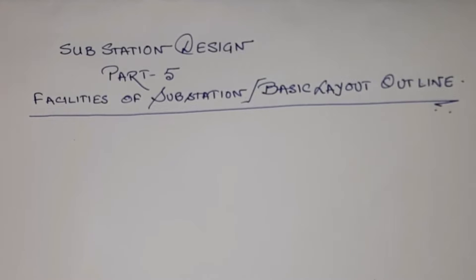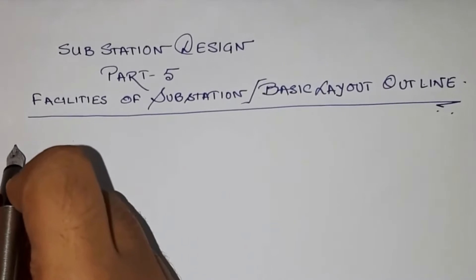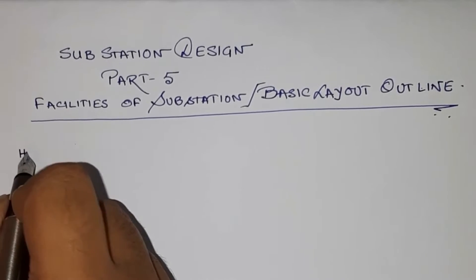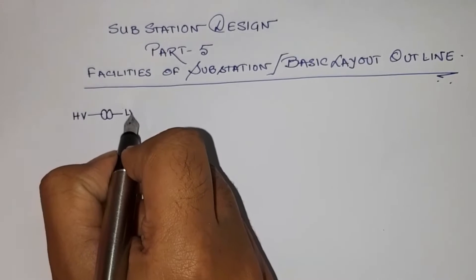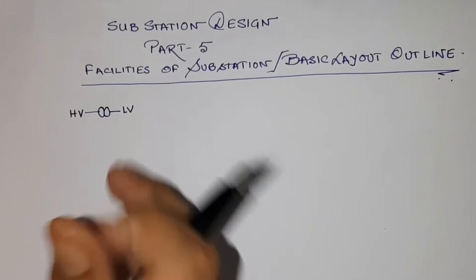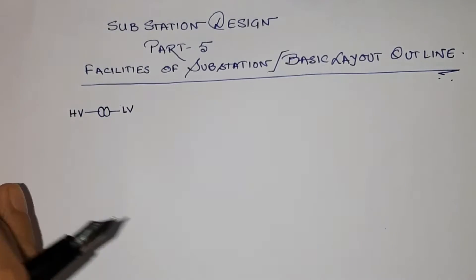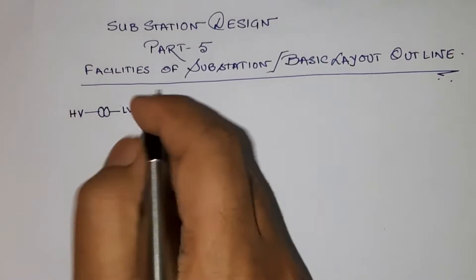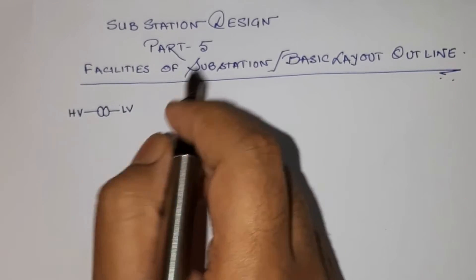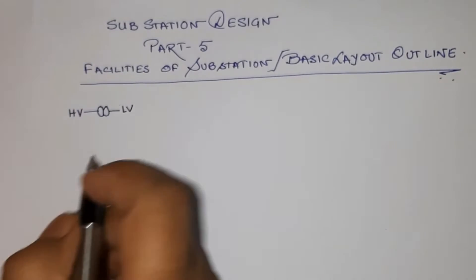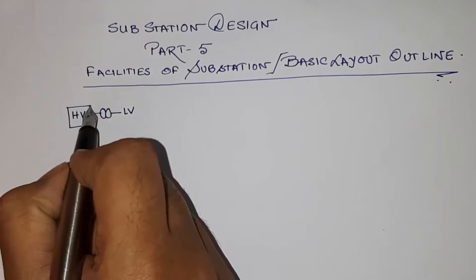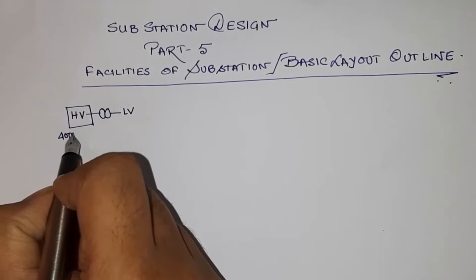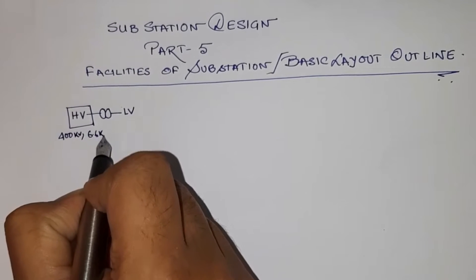So what is a substation? If we draw a single line diagram, basically the substation will have a high voltage side, then a transformer, then a low voltage side. This is the very basic element of a substation — it is converting voltage. There may be other low voltage or high voltage systems also, but this is the fundamental concept. The high voltage can be in the range of 400 kV or as low as 6.6 kV.